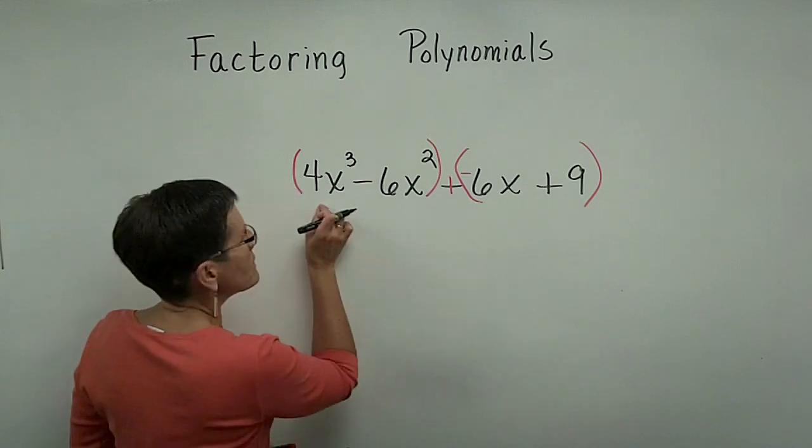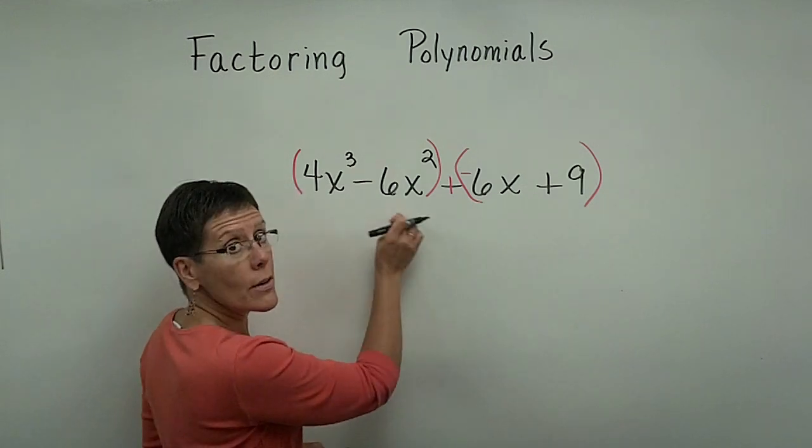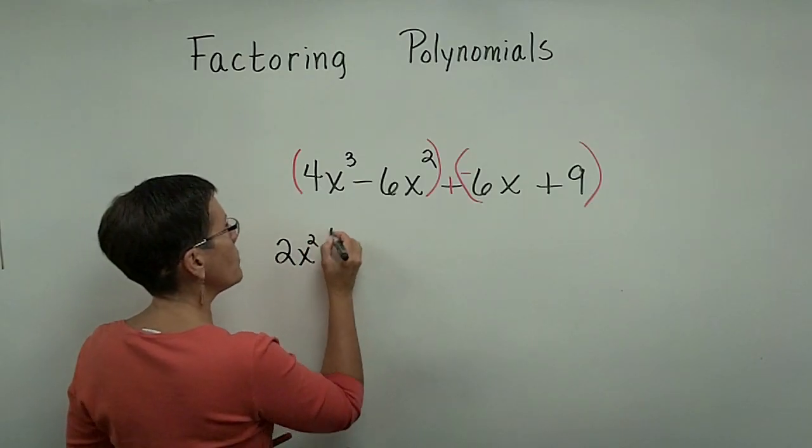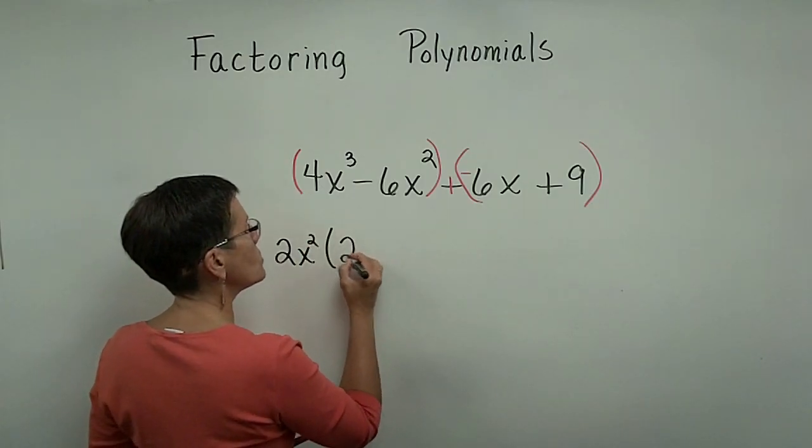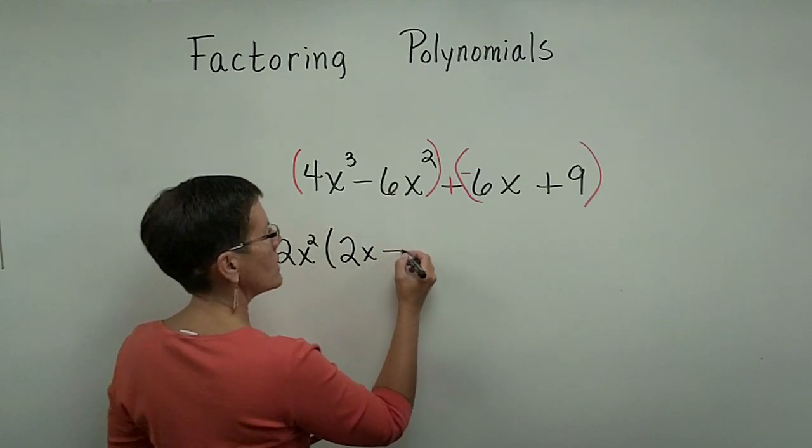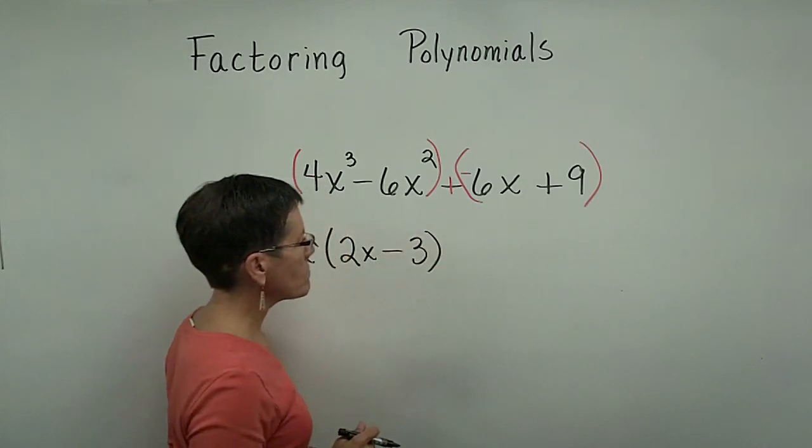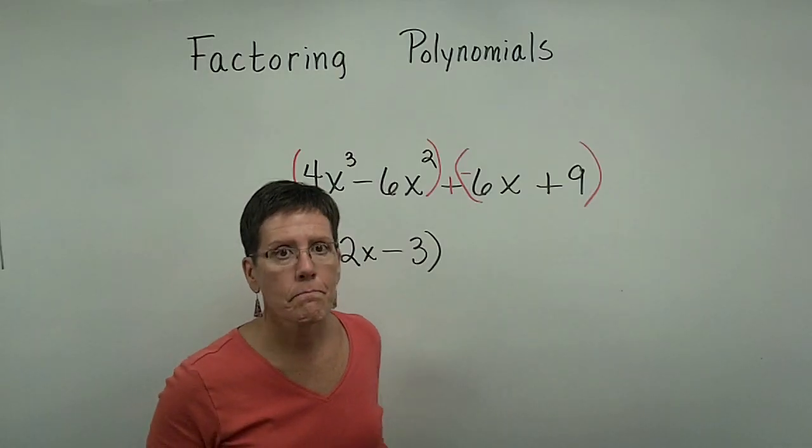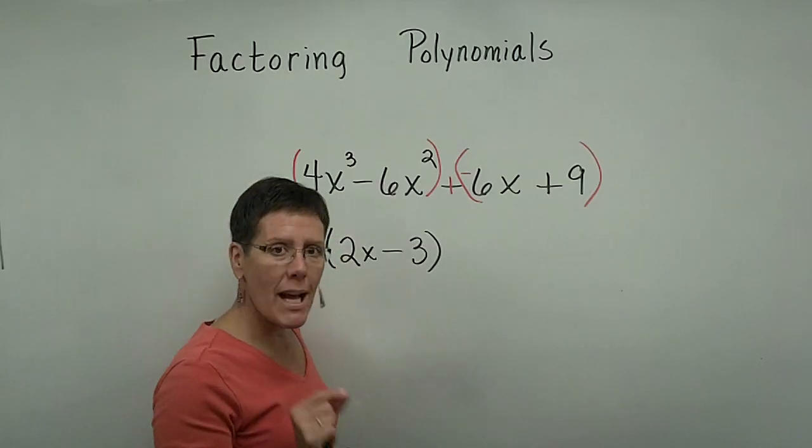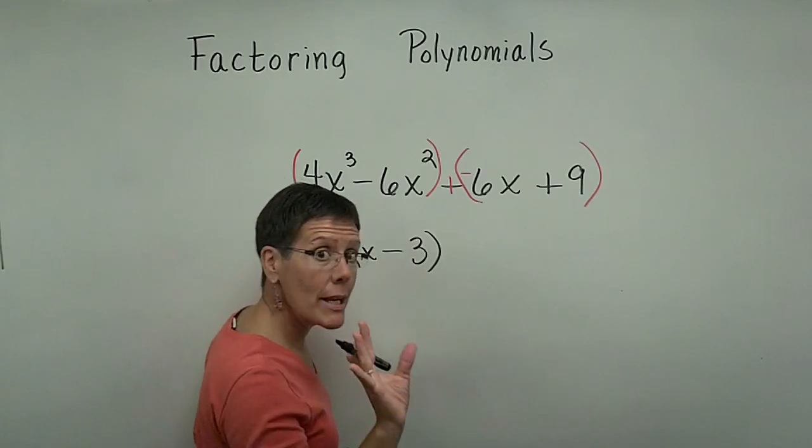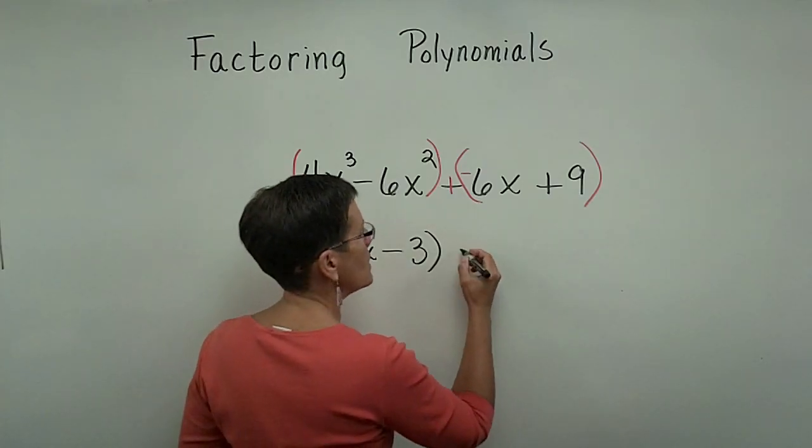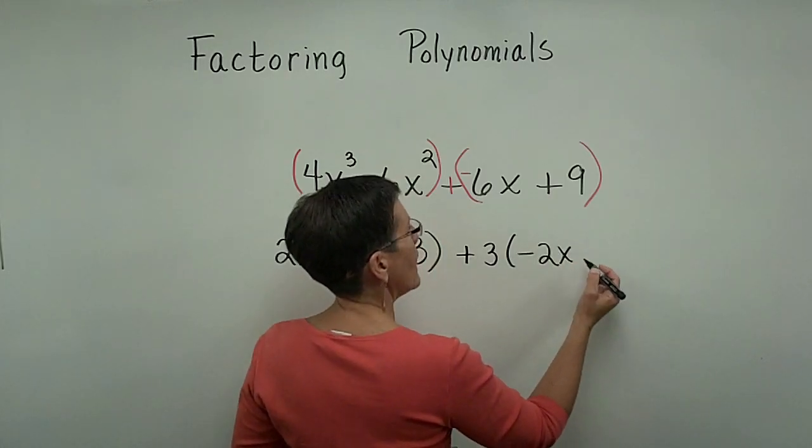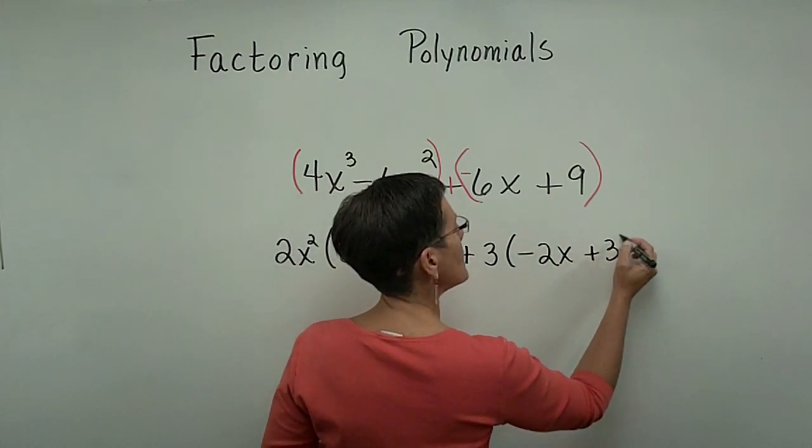Let's go ahead and factor. I need to take out 2x squared out of each of those. So 2x to the second power, and when I get that out, I have 2x here, and then I'm going to need a minus 3 right here. The greatest common factor between those two terms is a 3. But if I just take out a positive 3, if I took out a positive 3, then I would need a negative 2x here, and I would need a positive 3 here.